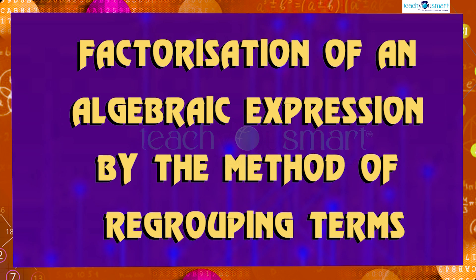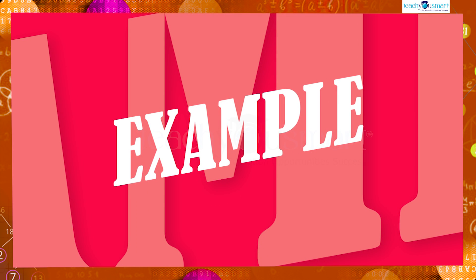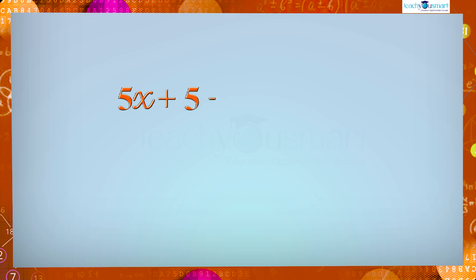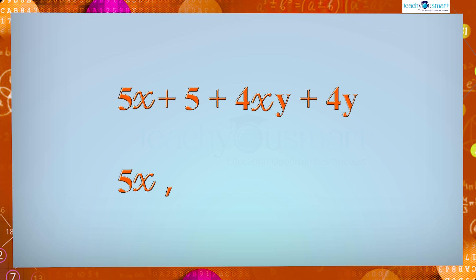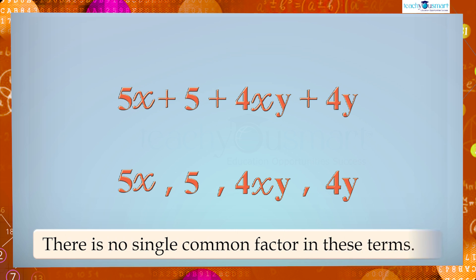Let's start with an example. Take the expression 5x + 5 + 4xy + 4y. In the given expression there are four terms: 5x, 5, 4xy, and 4y. Is there any single common factor in these four terms? No, there is no single common factor in these terms.